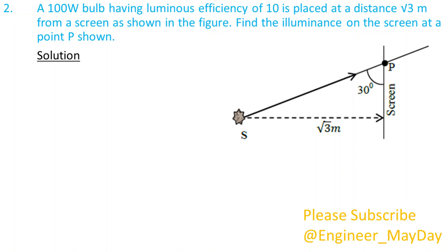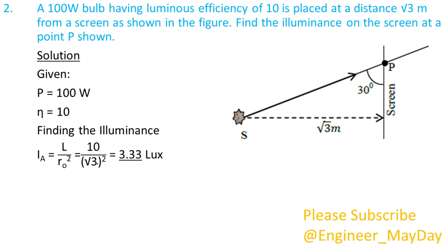Solution. Given: radiant flux P equals 100 watts, luminous efficiency η equals 10. Finding the illuminance: E equals 3.33 lux.